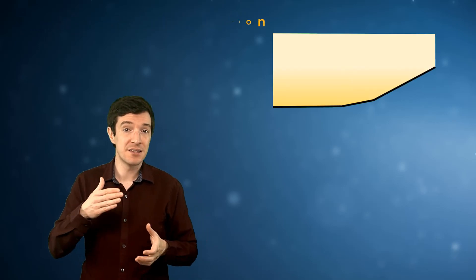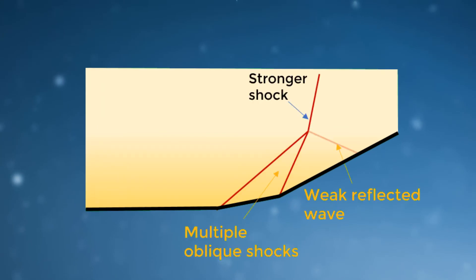If we have a segmented wall, at each corner a new shock wave will be produced. These waves will be eventually colliding and form a stronger shock.